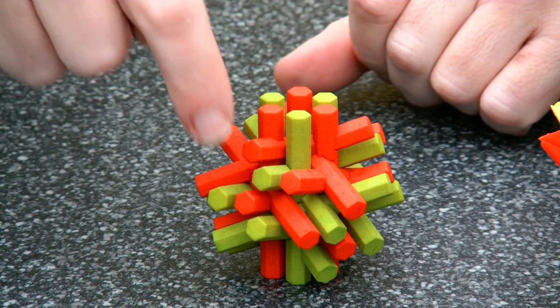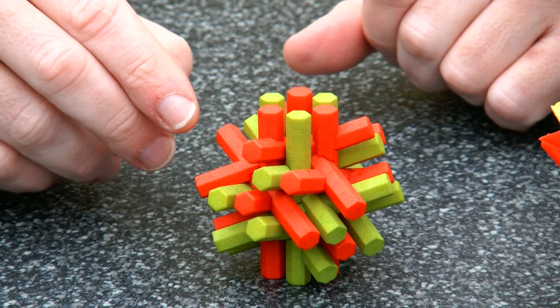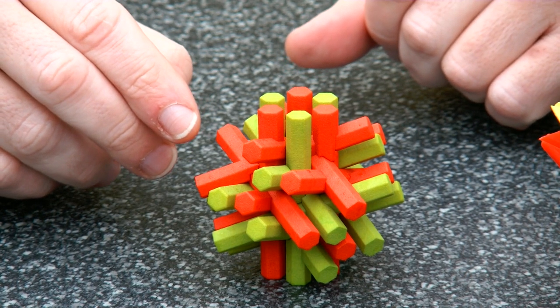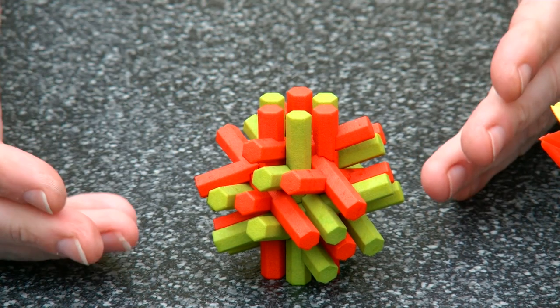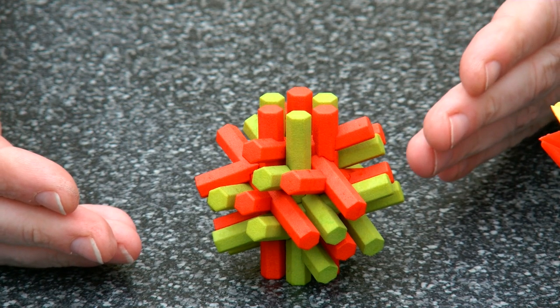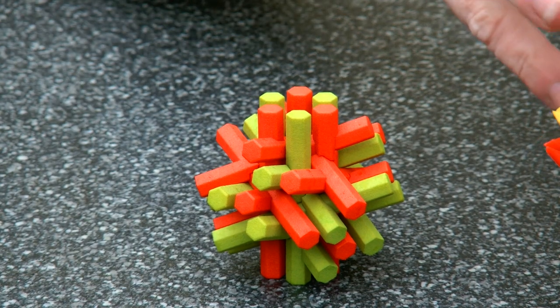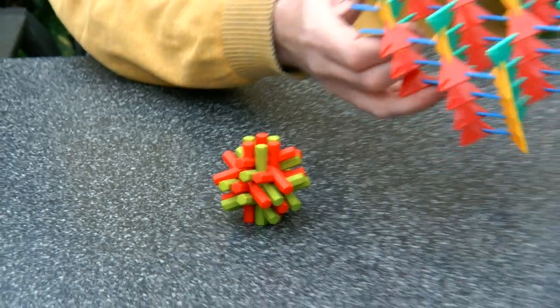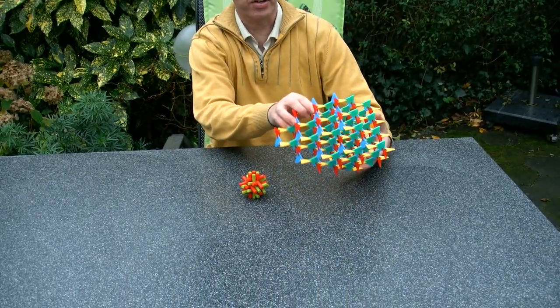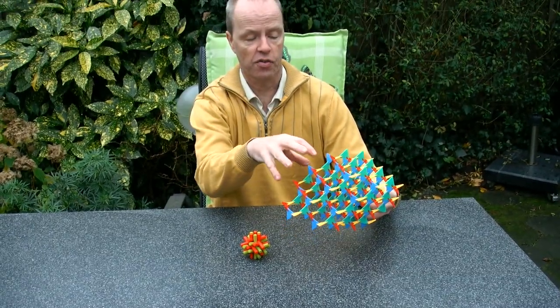So the red sticks are part of a right-handed diamond twin whereas the green sticks are part of a left-handed diamond twin. And in the same way with this crystal, a mirror copy of this crystal structure would fit right in.